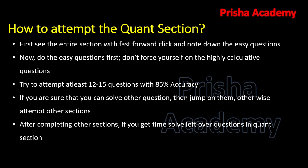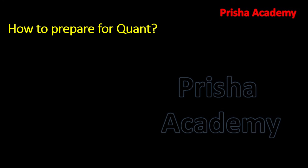After completing the other sections, if you get time to solve leftover questions in quant, then do it. Suppose you have 15 minutes remaining after attempting the other three sections — you can go back to the quantitative section. Using the note sheet from earlier, after doing easy questions, jump to moderate questions or questions you were able to partially work through. Then if you still have time, try to do the hard or difficult questions.